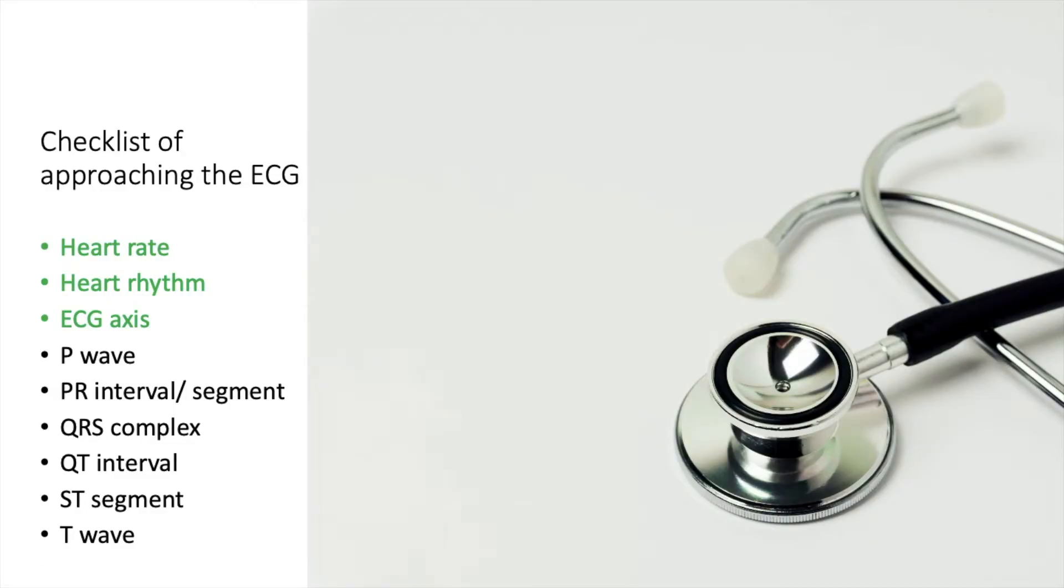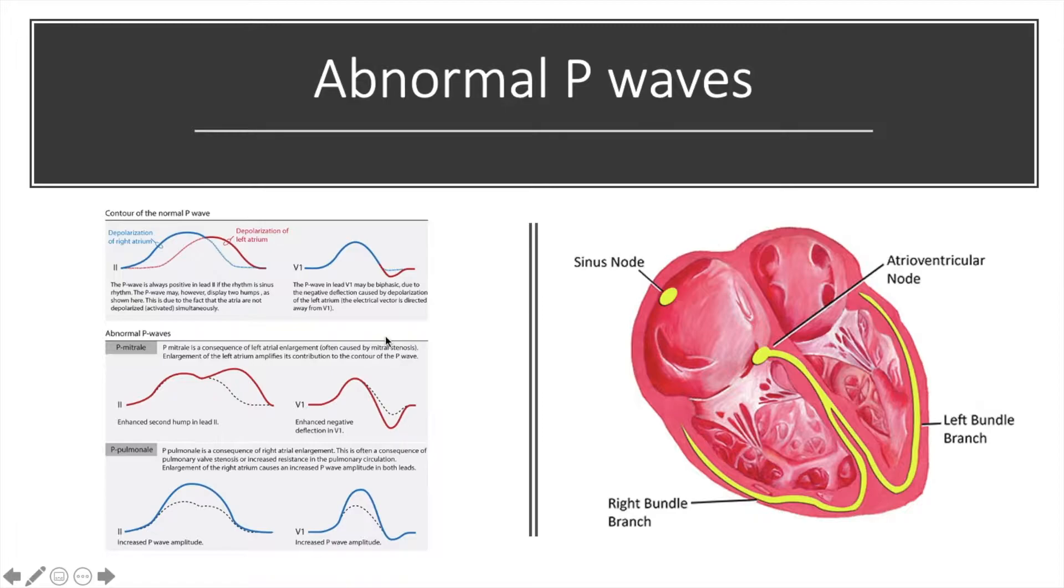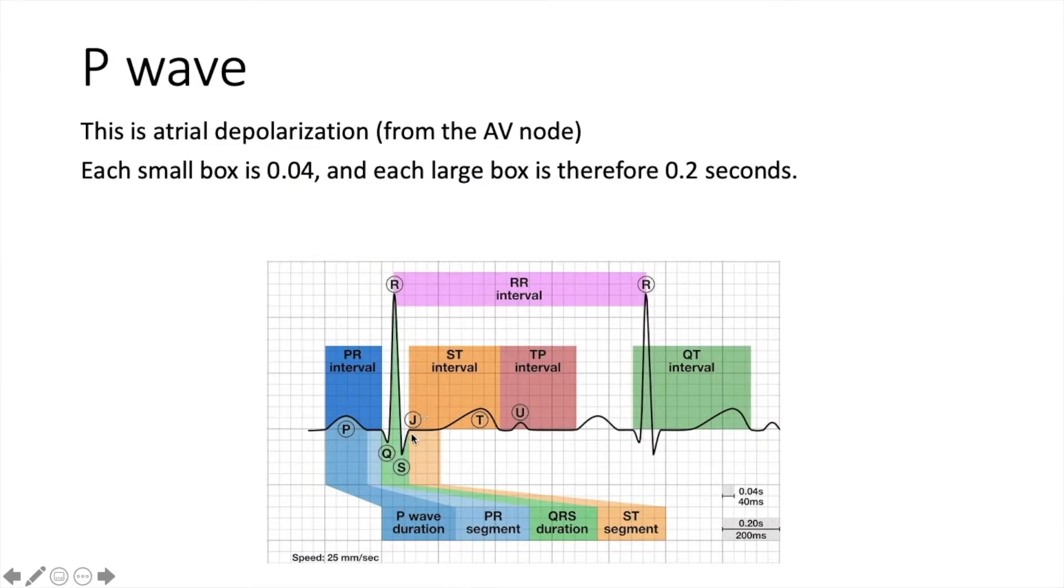The next bit that we need to look at is the P wave. For the rest of the ECG interpretation, the way that I would do it is to look at the P wave and then just work through each aspect of it systematically. So the P wave, the PR interval, the QRS complex, the ST segment or ST interval, and then the T wave.